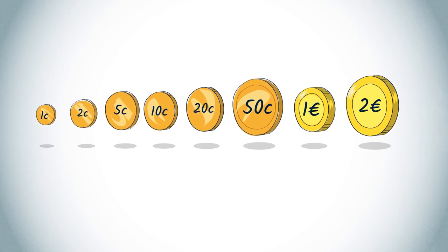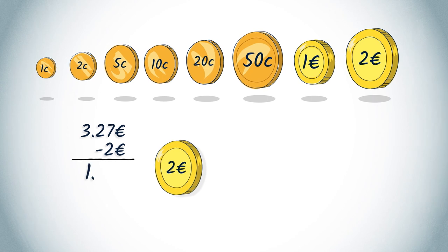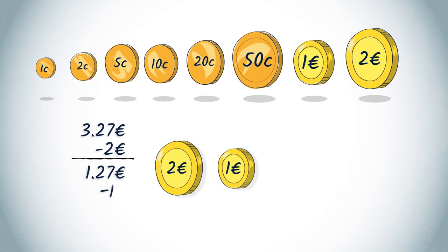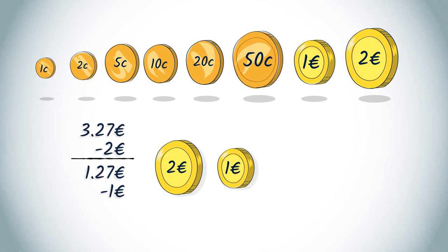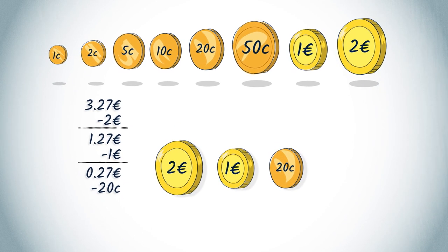So if you want to return 3 euros 27 cents, then the algorithm will first return a 2 euro coin, leaving 1 euro 27 to be returned, then a 1 euro coin, leaving 27 cents to be returned, then a 20 cents piece, leaving 7 cents to be returned.